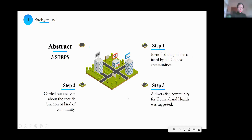This research identifies the problems faced by Chinese communities first, then carries out analyses about what specific function or kind of community — considering human, land, and the harmonious development of human and land — could solve the existing problems. Finally, a diversified community for human-land health is suggested.